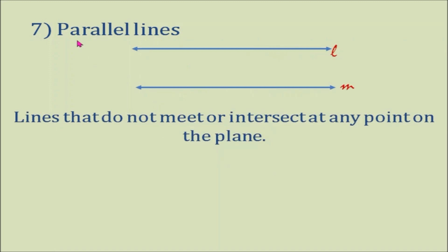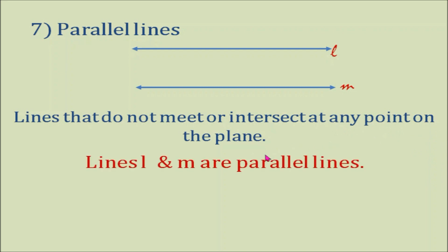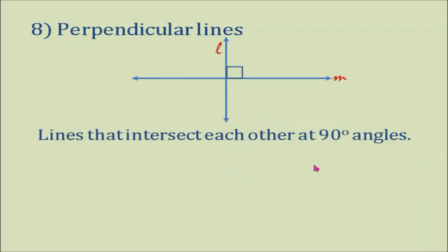Number 7: Parallel lines. They are lines that do not meet or intersect at any point on the plane. Here we have two lines, line L and line M. Lines L and M are parallel lines.